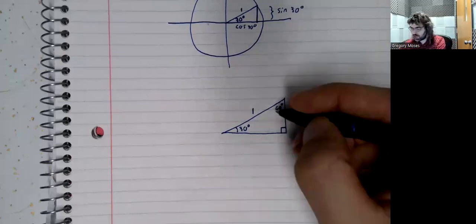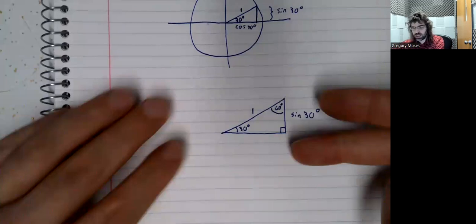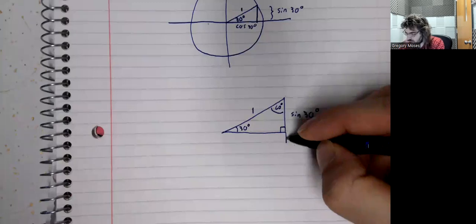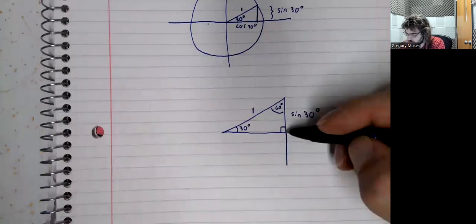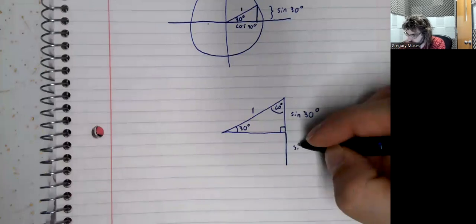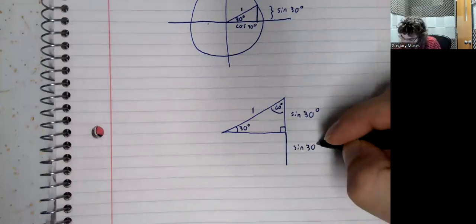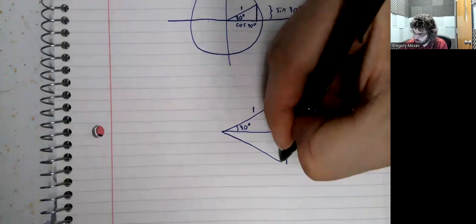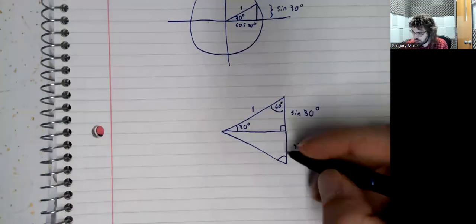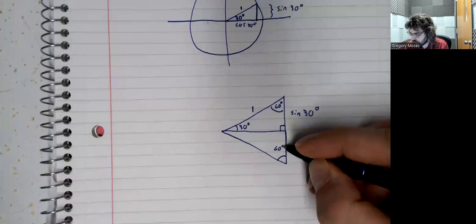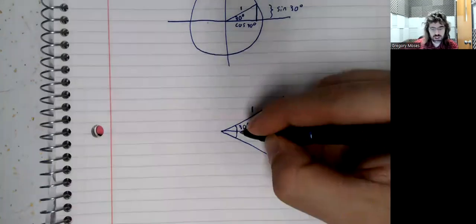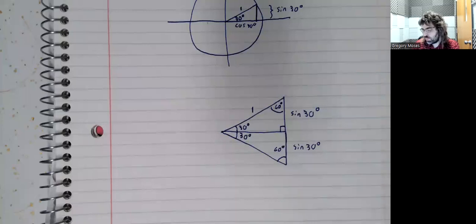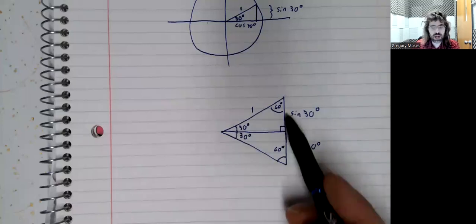And now we're going to take this triangle and create a mirror image. So we're going to go down by this same length, down by the sine of 30. And we'll have 60 degrees here and 30 degrees here. And now we'll stop looking at the right triangles and we'll look at this big triangle.